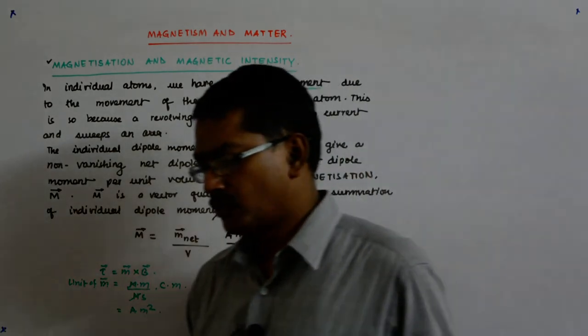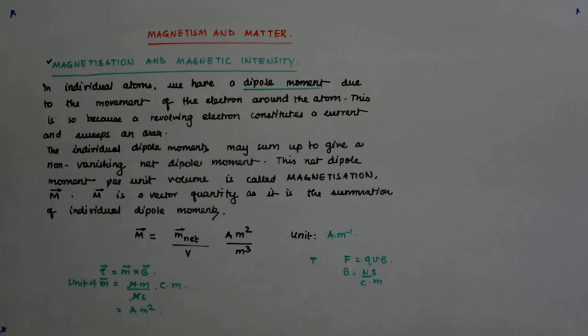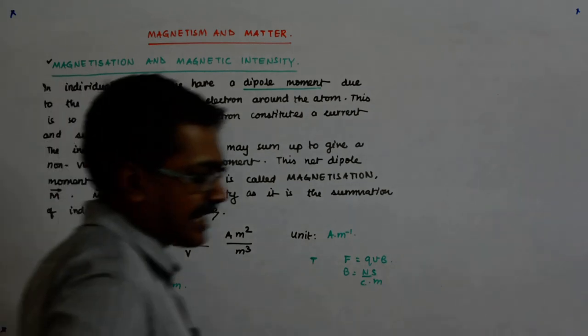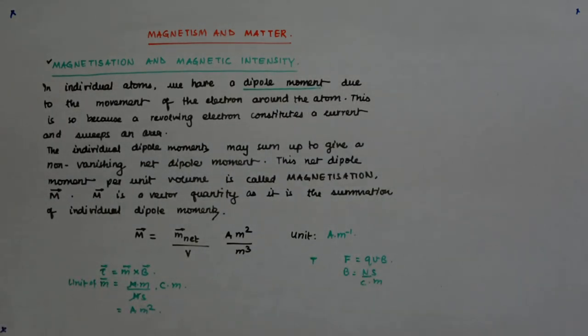So unit of it is ampere per meter. That is how I define magnetization. Now once you understand this we can go ahead to define the magnetic intensity.